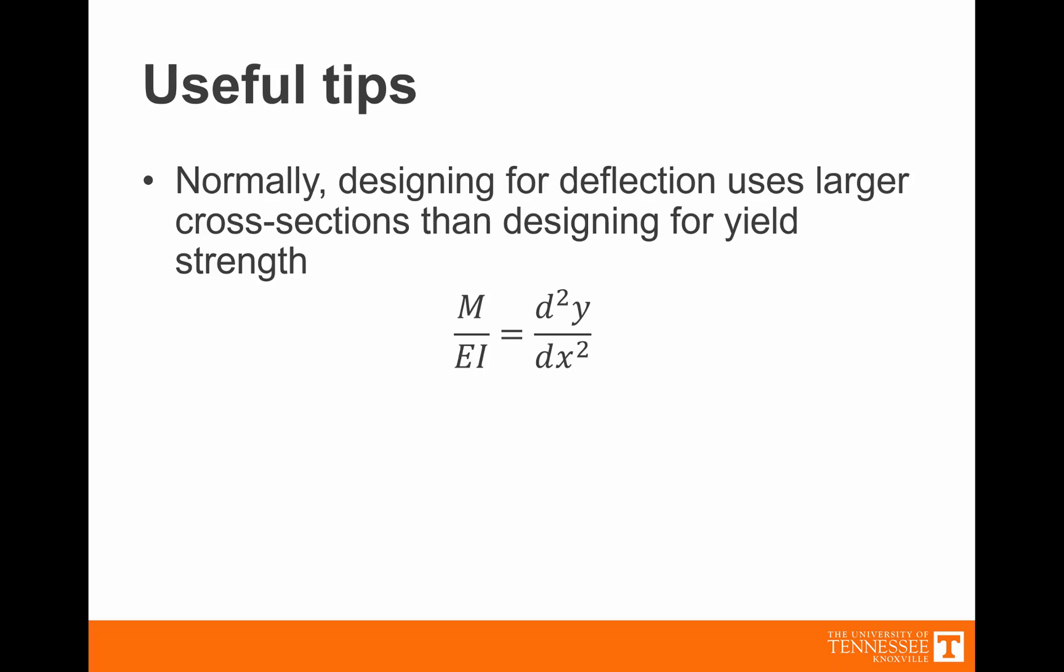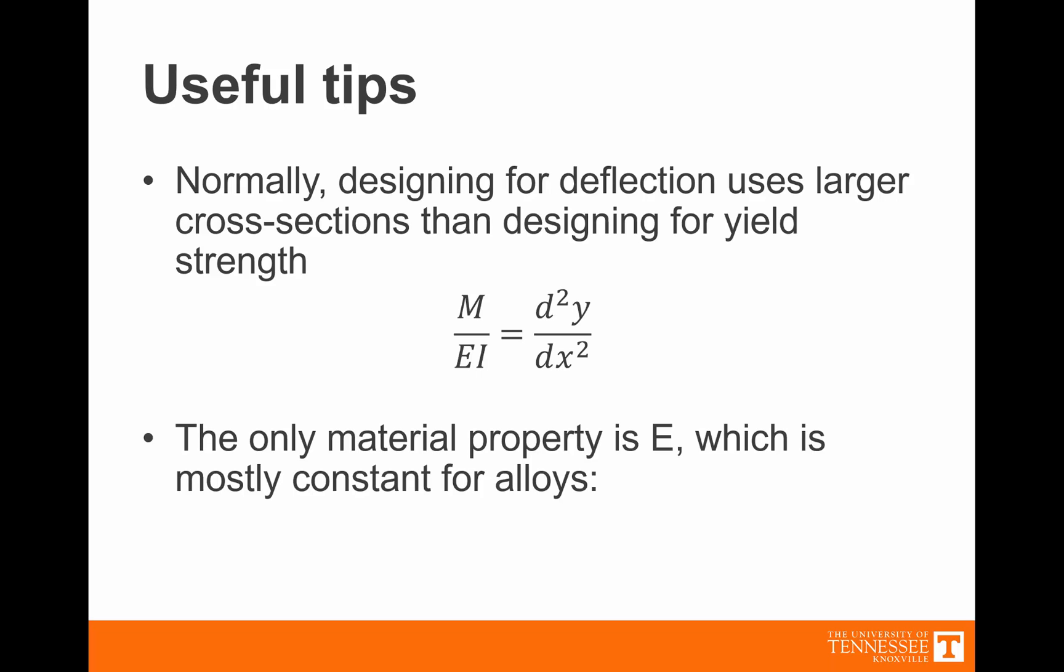Looking at this equation, the only material property is E. I has to do with the geometry. M has to do with the loading condition. For most alloys, E is a constant. Therefore, low strength steels typically resist deflection as well as high strength steels. That means if we're designing for deflection, a low strength steel is very often just as sufficient as a high strength steel to get the same deflection.